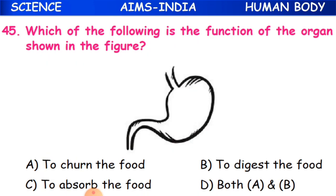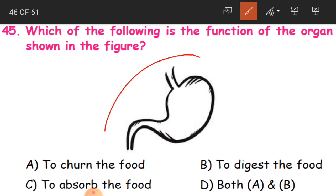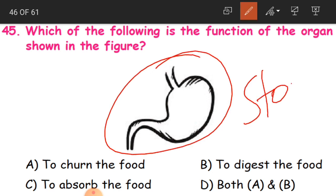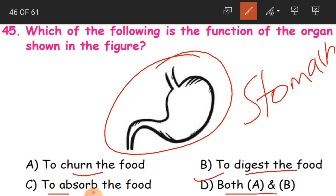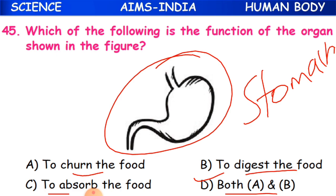Question 45: What is the function of the organ shown in the figure? The organ is the stomach. Its functions are to churn the food and to digest the food. Both A and B are correct, so D is the correct answer.